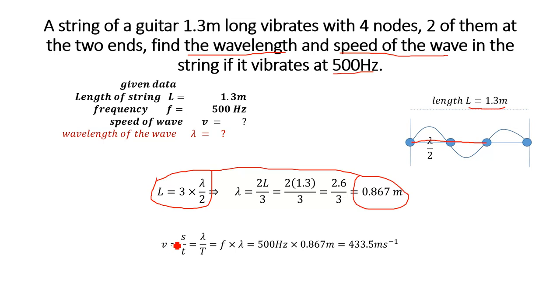Speed of the wave: we know that v is equal to s divided by t, where s is displacement and t is time. In the case of waves, this becomes lambda divided by time period.